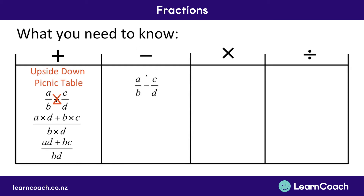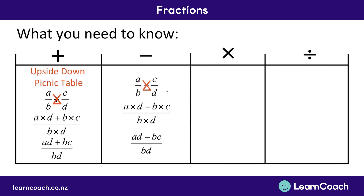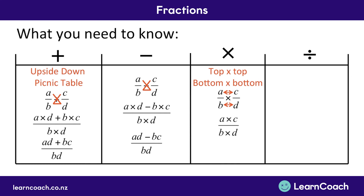The same applies when we're subtracting — it's again an upside-down picnic table. We do what's called cross multiplying: b and c, and a and d, and they both go up to the top. Remember we still have our minus in between them, and we multiply the two bottom terms together. Simplifying this down, that's a times d — the two opposite terms brought up to the top — minus b times c — the other two opposite terms — all divided by b times d, the two bottom terms. When we're multiplying, we have top times top and bottom times bottom, giving us a times c divided by b times d, then we simplify.